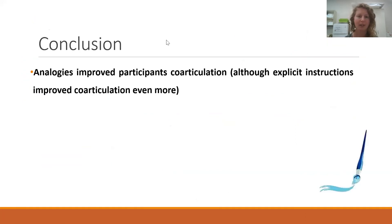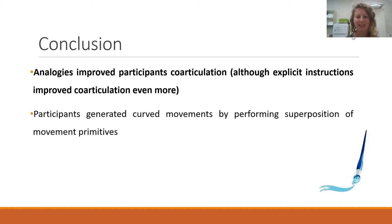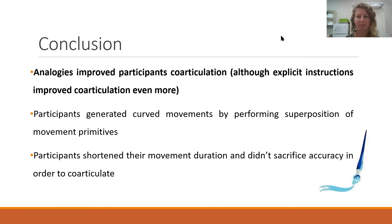And then the second thing that we were interested in is the movement duration, how rapid were participants completing the task. And here we did see a reduction in movement duration, meaning going out from point A and returning to point A in general, participants did it faster or in less time. And you see like the explicit group kind of started out being faster, but we compared each group to itself. So overall, all the groups improved in this measure. All right. So I want to talk a bit about the conclusions from this experiment, and then I'm going to present another experiment. So stay with me. As I said, analogies improved participants' co-articulation, but explicit instruction did that even more. Participants did generate curved movements, performing superposition of movement primitives and participants shortened their movement duration and didn't sacrifice accuracy.